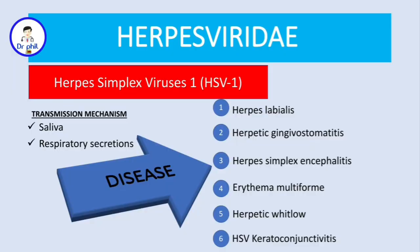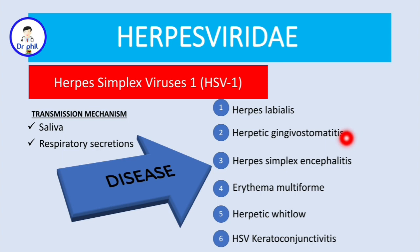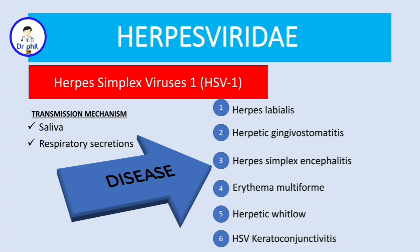Let's review the conditions caused by herpes simplex 1 virus: number one, herpes labialis; number two, herpetic gingivostomatitis; herpes simplex encephalitis; erythema multiforme; herpetic whitlow; and keratoconjunctivitis.